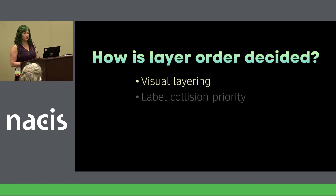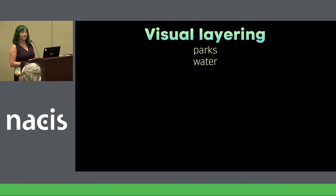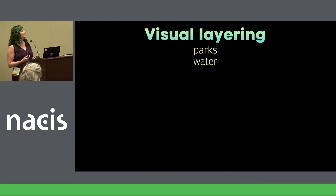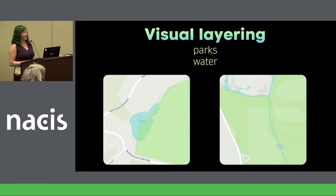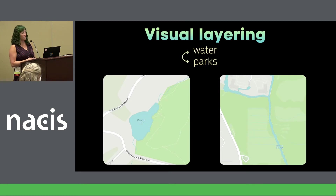Visual layering means layering things so they look clearest to the eye. Starting simple with two layers — parks and water — it seems logical to layer parks on top of water. But park boundaries often include rivers and extend into water bodies, so it's not the greatest visual experience. Switching the order looks much better.